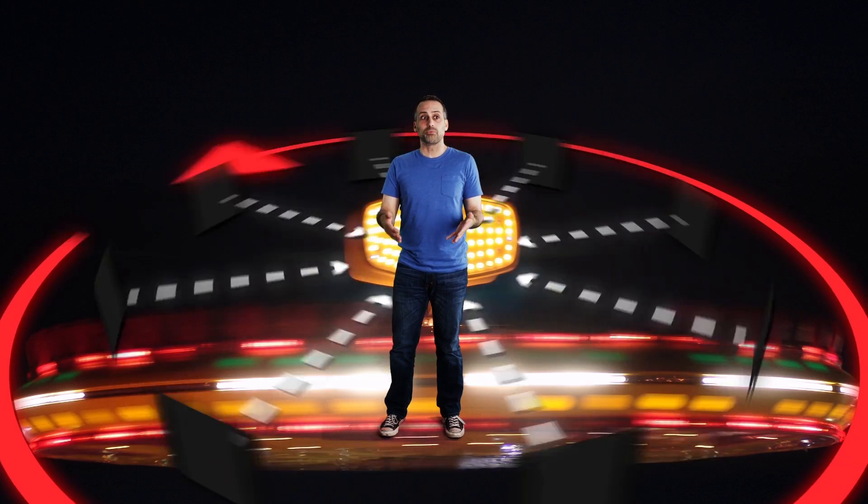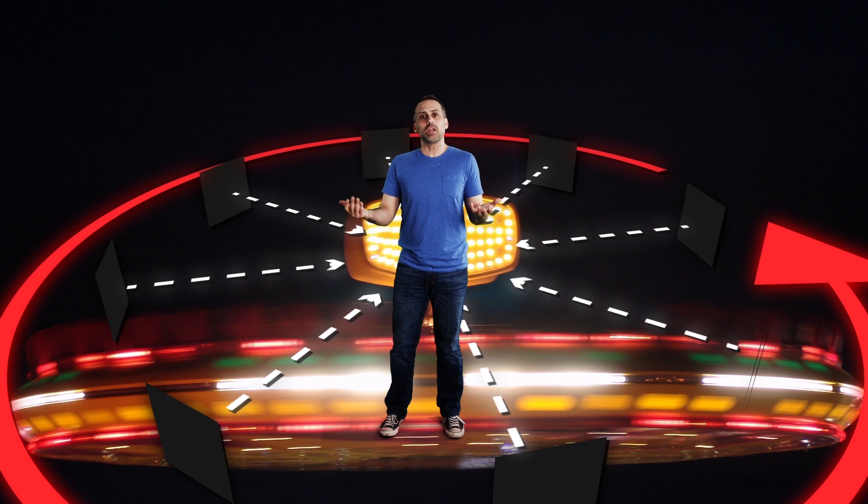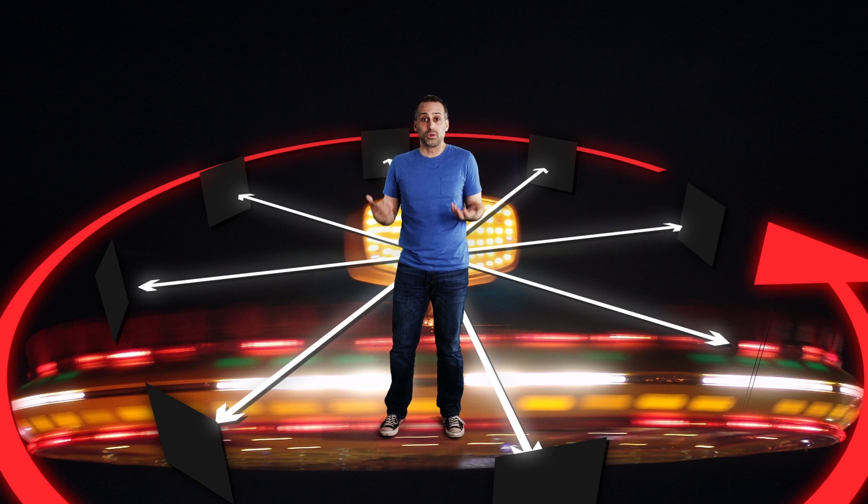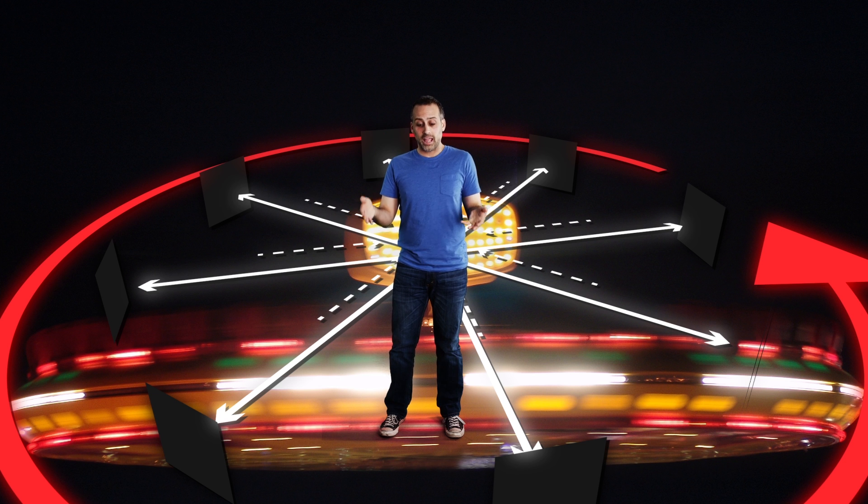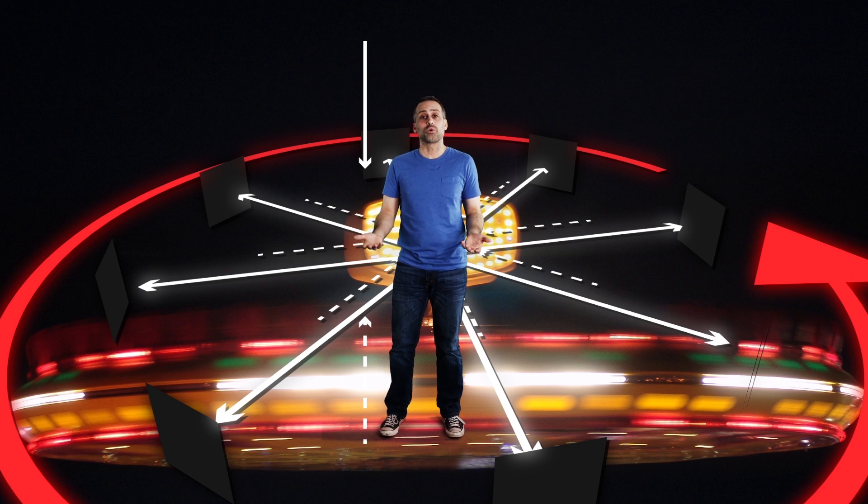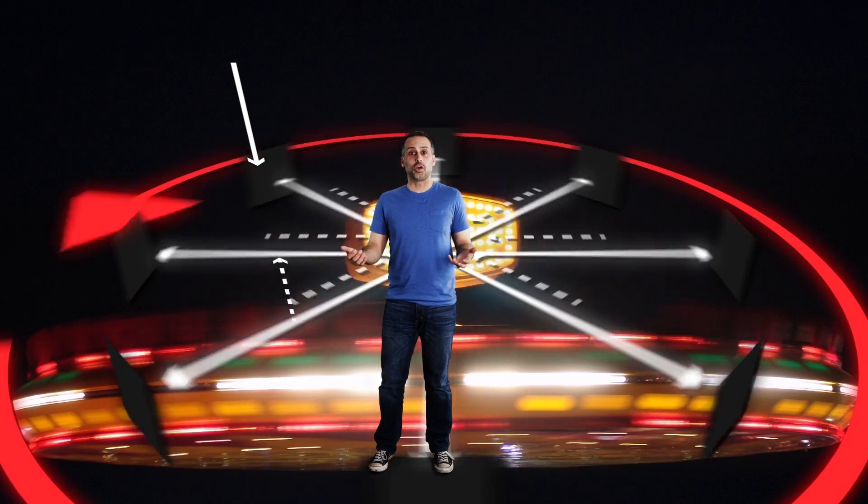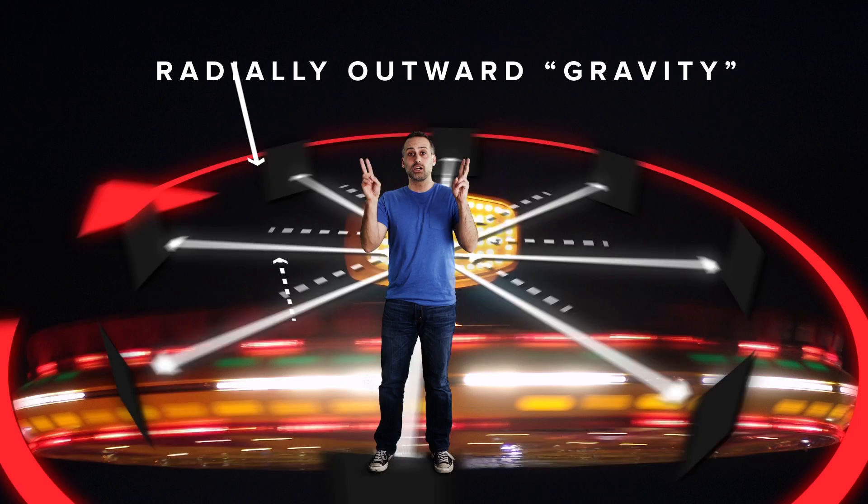But what do things look like from the perspective inside the rotating room? In there, it doesn't look like anything is spinning. Instead, it appears that there's some mysterious force that wants to hurl you outward. And the reason the wall is pushing against you is to prevent that outward fall. Kind of like how the ground here on Earth pushes up on your feet to keep you from falling inward toward Earth's center. So bottom line, from the perspective of the room, it's as though there's a radially outward directed gravity.